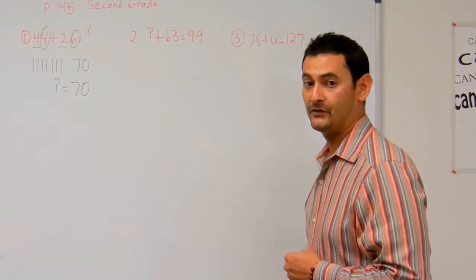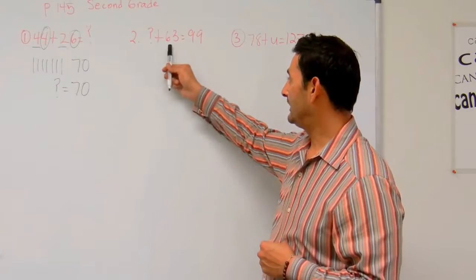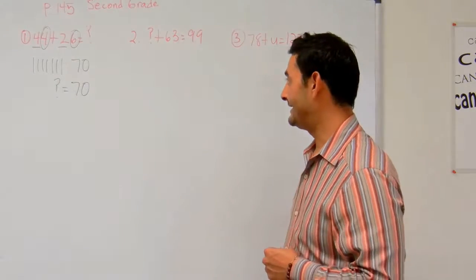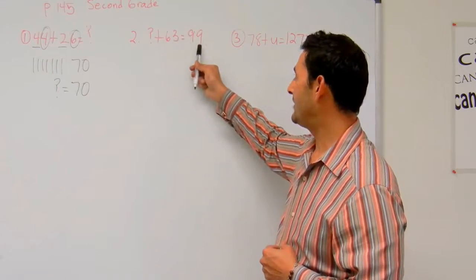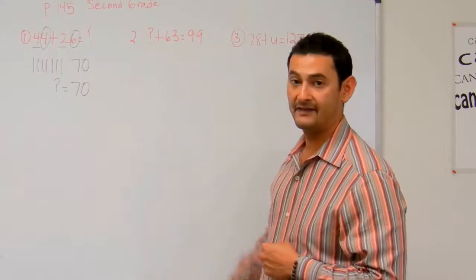Now let's take a look at number 2. Here I've got question mark plus 63 equals 99. What I'm going to do is I'm going to count up, because if I just count up to 99, I'm going to find that missing number.